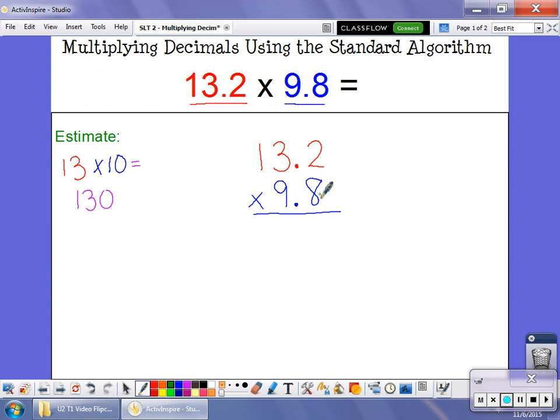So if I were doing just a straight multiplication problem here, I would do 8 times 2, which is 16. And then 8 times 3 is 24 plus 1 is 25. And then 8 times 1 is 8 plus 2 is 10.